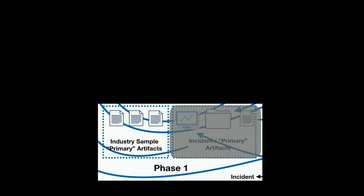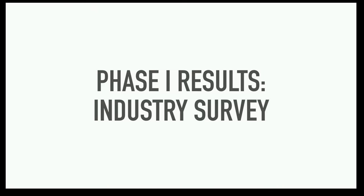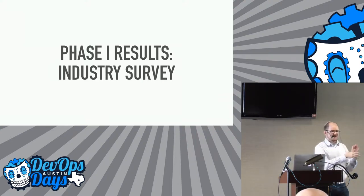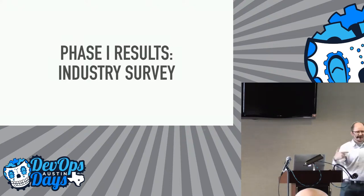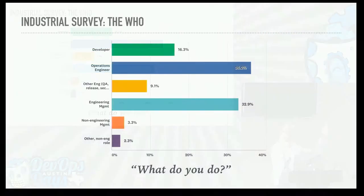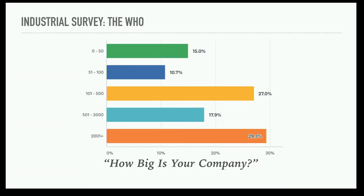The first phase was an industry survey — some people in the room were kind enough to send it out and tweet it, and we got a number of really good results. Who took the survey? The two big groups were operations engineers and engineering management. Interestingly, developers didn't really take the survey. What size company? There was a big chunk of mid-size — 100 to 500 people — and then greater than 2,000. Almost a full third worked at really large organizations.